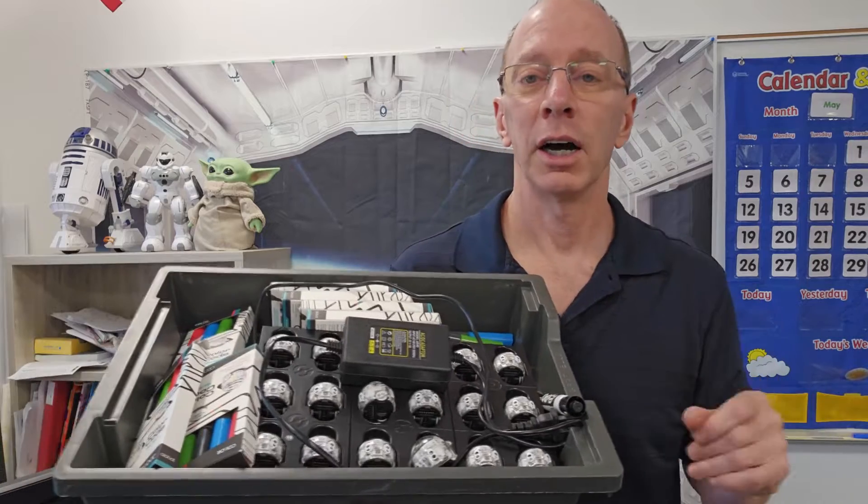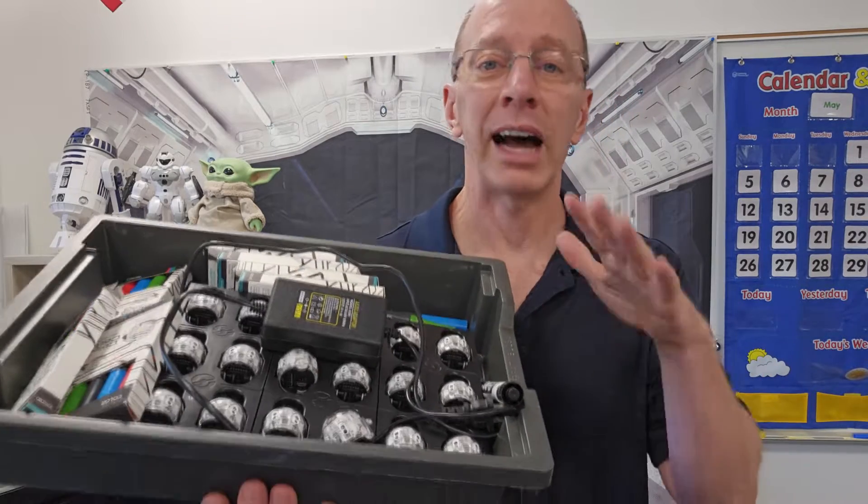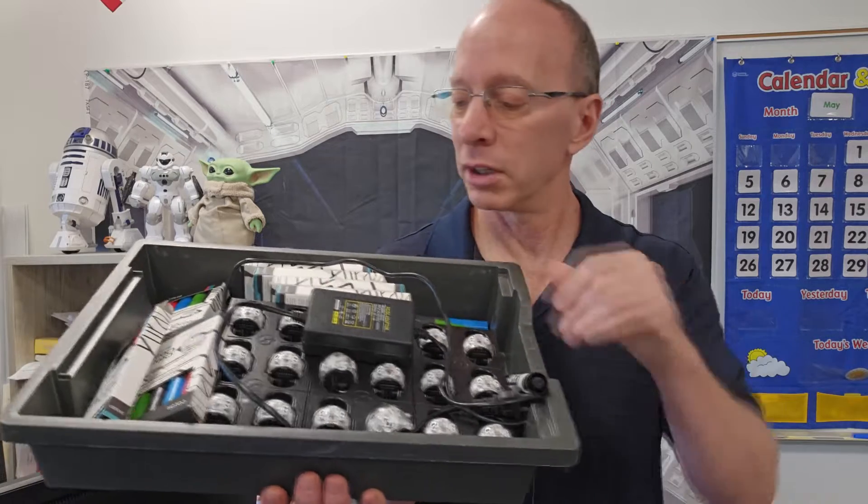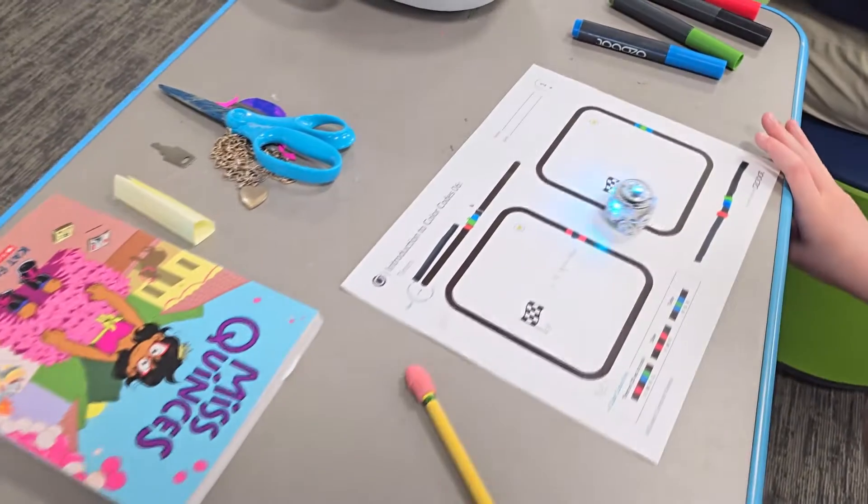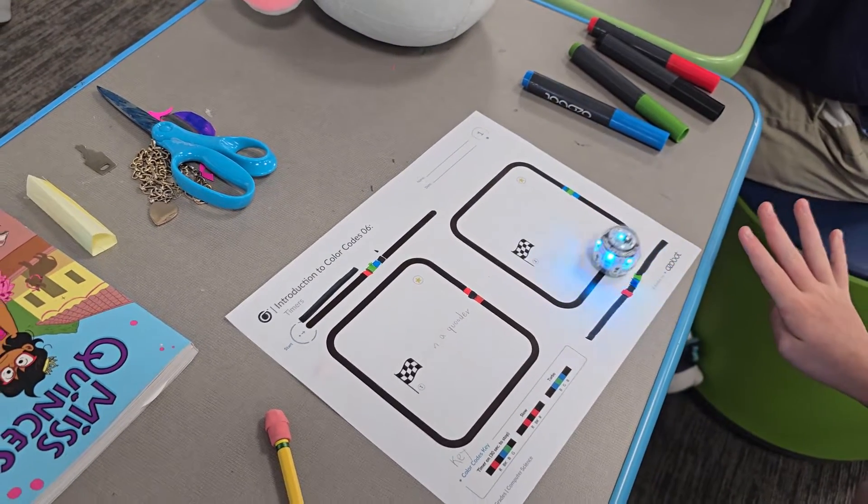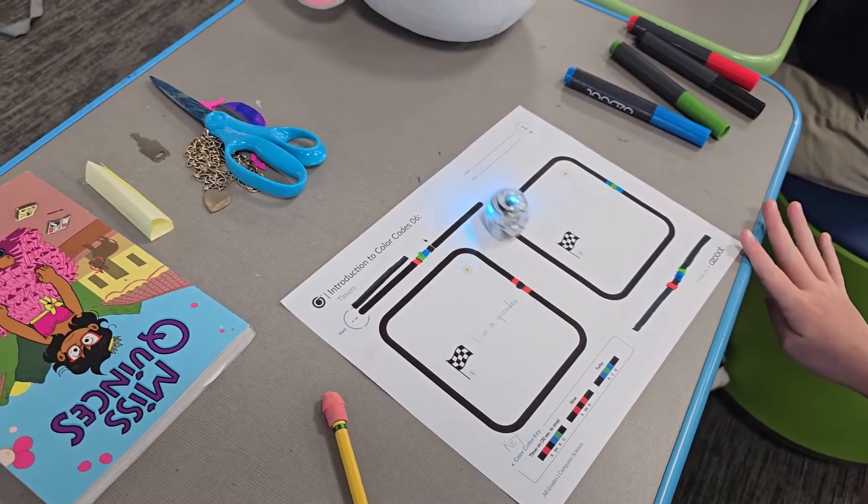You also get some booklets, but let me tell you a little bit about Ozobots. There's two ways you can code them. You can code them using the markers by doing different color combinations, and you can see right here in the video that the students are putting in different codes with the colors,